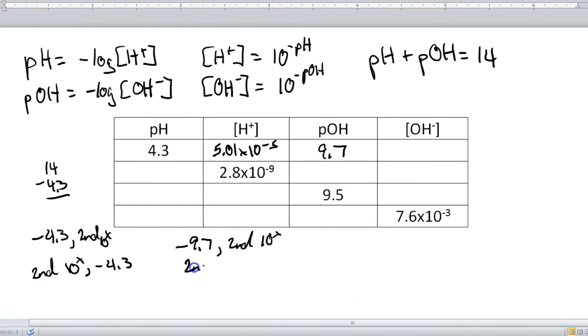Or you do the second 10 to the x, and then you type in negative 9.7. And when you do that, you get something that's like 1.995 times 10 to the negative 10th. So I'm going to round that to 2.0 times 10 to the negative 10th power.